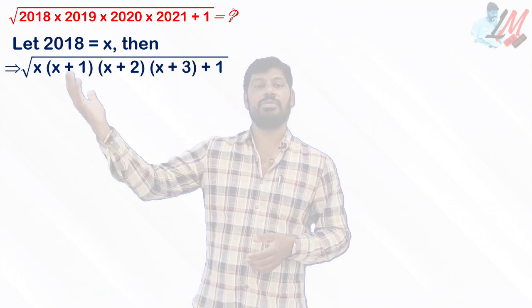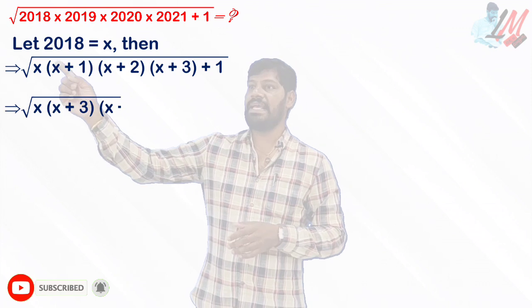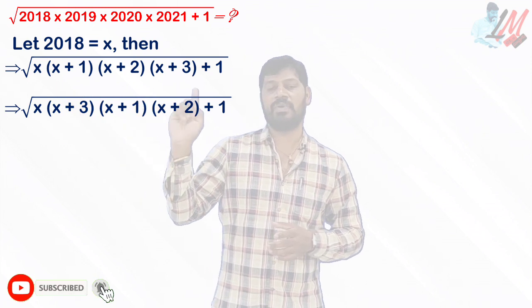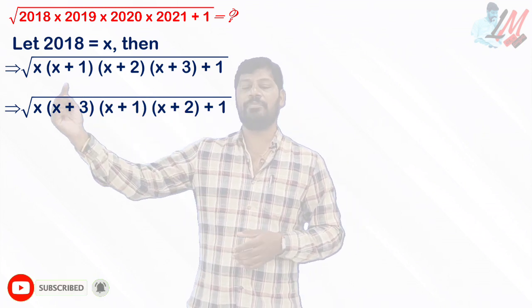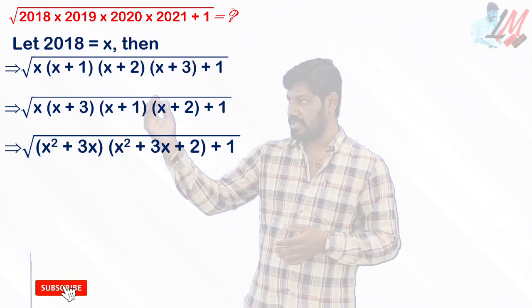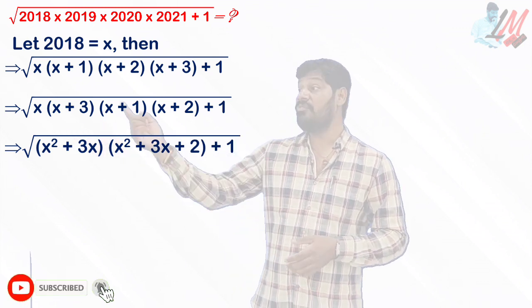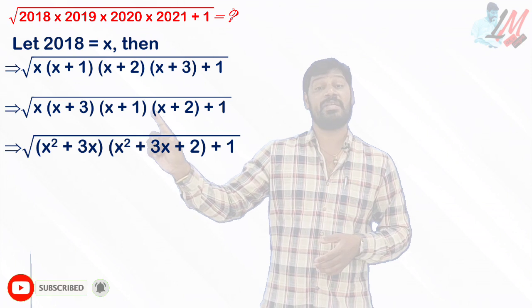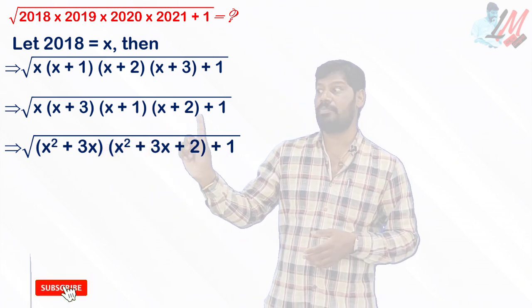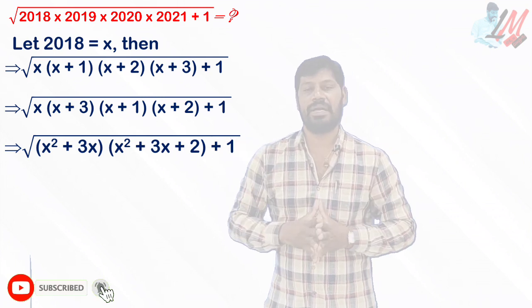We have x(x+1)(x+2)(x+3). I am making two different pairs: x and (x+3) aside, and (x+1) and (x+2) together. Multiplying x and (x+3) gives x²+3x. Multiplying (x+1) and (x+2) gives x²+3x+2. So we have the square root of (x²+3x)(x²+3x+2) + 1.